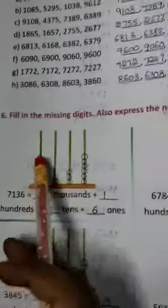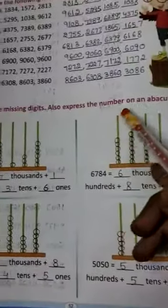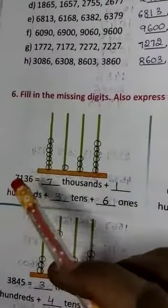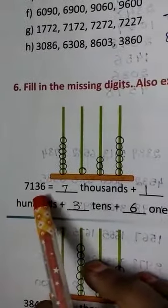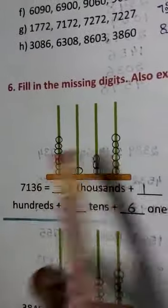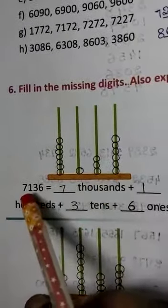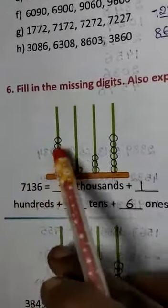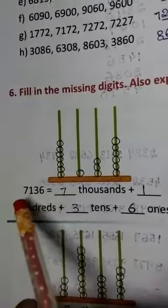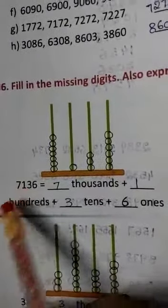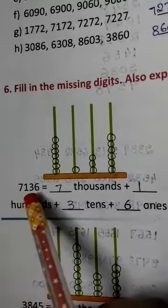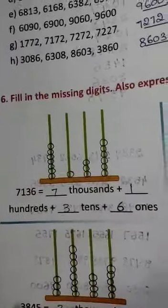Next, number 6. Fill in the missing digits, also express the number on an abacus. Now the first one is 7136. 1s place has 6, so 6 beads. 10s place has 3 beads. 100s place has 1 bead. 1000s place has 7 beads. 7 thousands, 1 hundred, 3 tens, 6 ones. 7136.